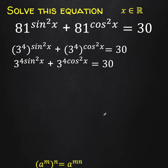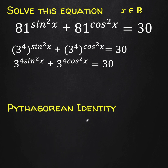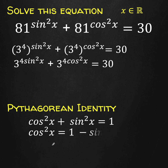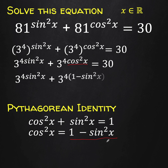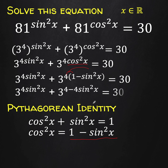Let's recall some trigonometric identities. According to the Pythagorean identity, cosine squared x plus sine squared x is equal to 1, or solving for cosine squared x, that is equal to 1 minus sine squared x. That means we can replace cosine squared x by 1 minus sine squared x, and this is the result. Then let's distribute this 4 to the binomial to arrive at the next expression.